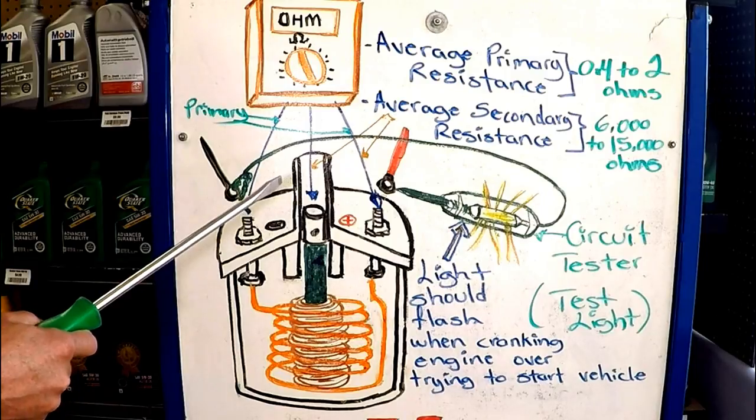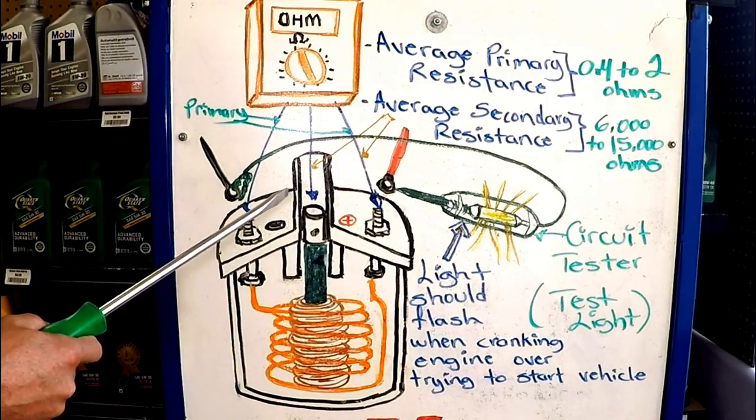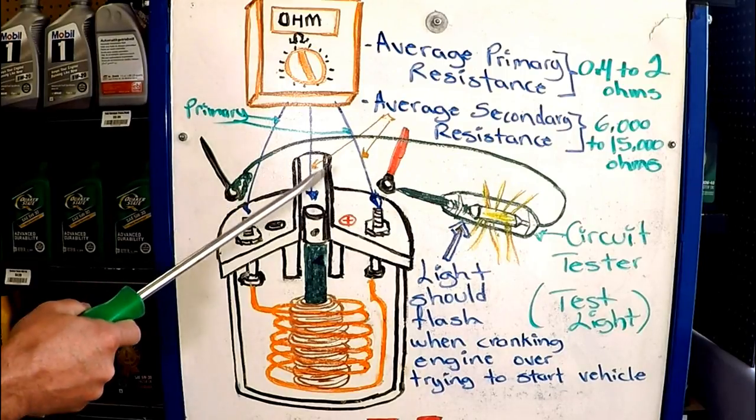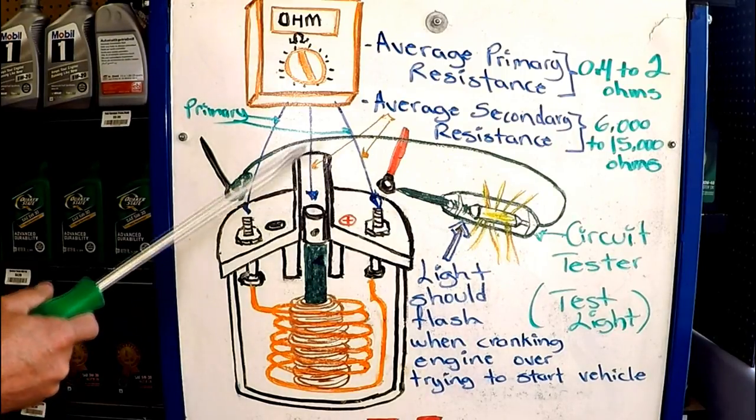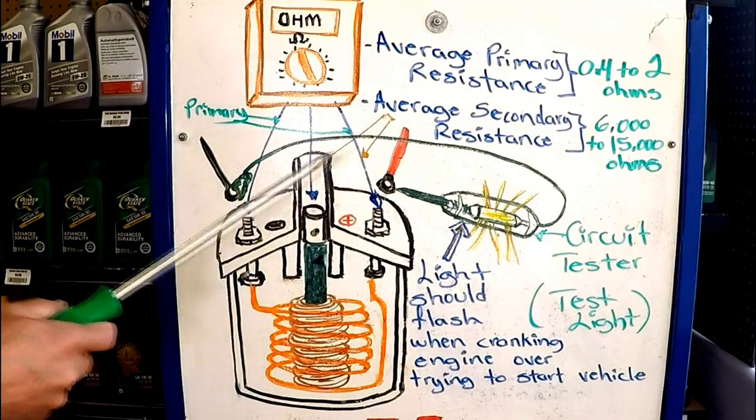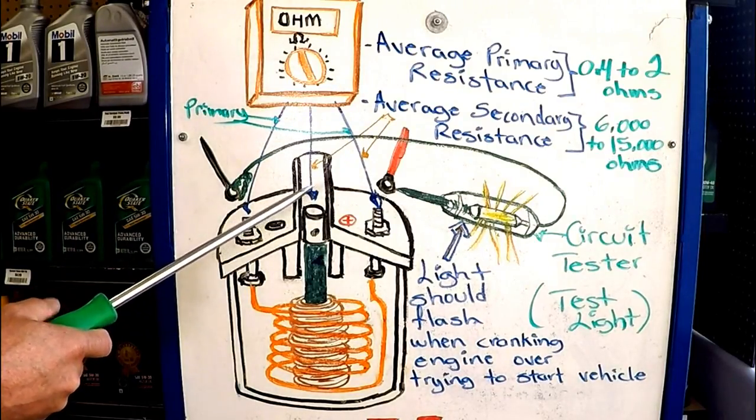But for your vehicle you still need to find out what resistance your coil should have, and you can find out easily. You can either look it up online or you can call your local auto parts store and get that information from them. That way you know exactly what the resistance should be for your vehicle. But this illustration will give you a very clear understanding on how to do it and should be a very good starting point for you.